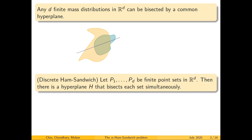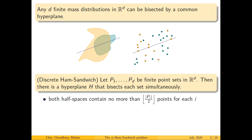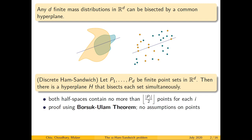There is also a discrete version of this theorem where the masses are replaced with finite point sets, and again there is a hyperplane that bisects each of the point sets. As a simple example, we have point sets from two colors and this line divides both colors. More precisely, both half spaces determined by the hyperplane contain no more than half the points for each color.